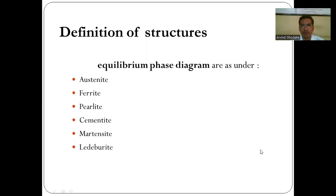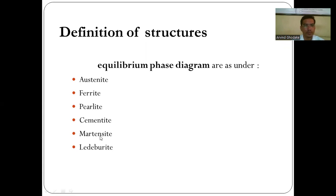Welcome to engineering materials and metallurgy. Today we will discuss the different structures present in the iron-iron carbon equilibrium diagram. In the equilibrium phase diagram, the following phases exist: first is austenite, second is ferrite, third is pearlite, fourth is cementite, fifth is martensite, and sixth is ledeburite.